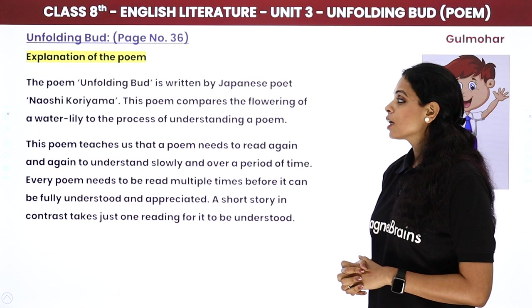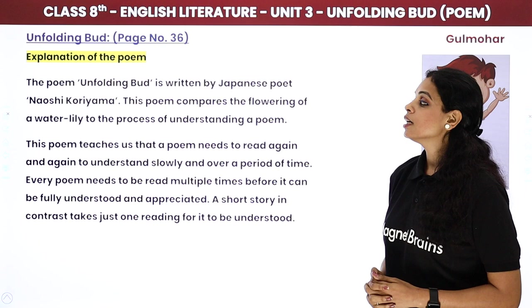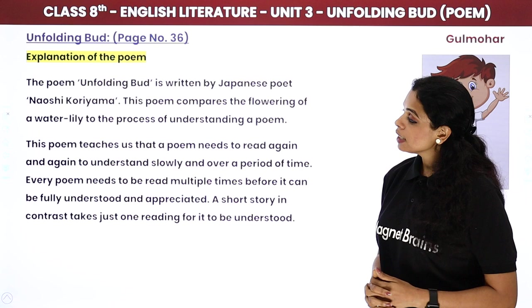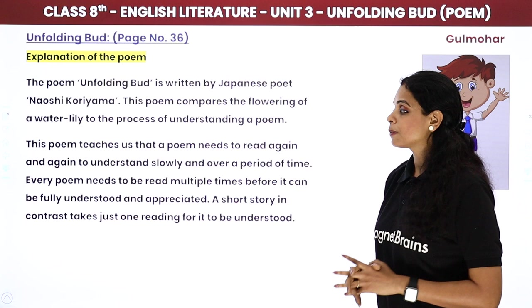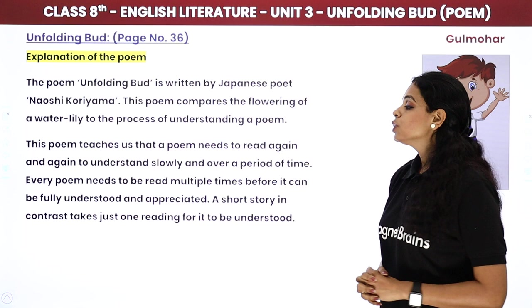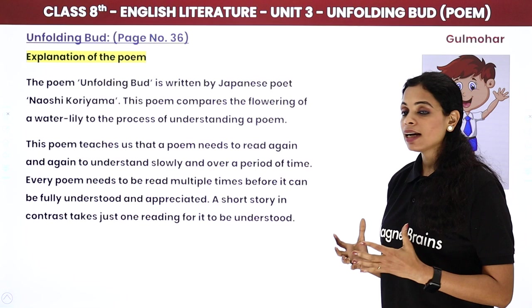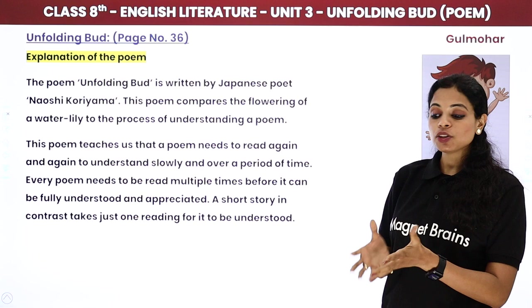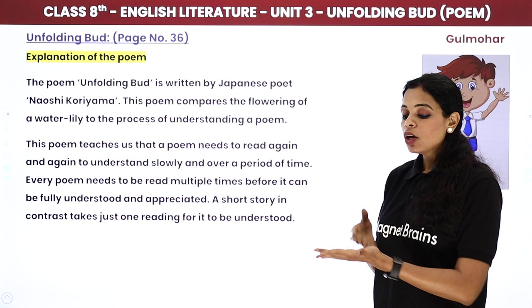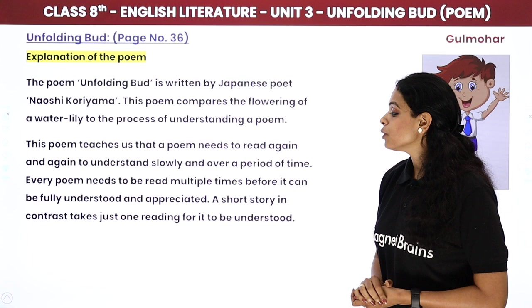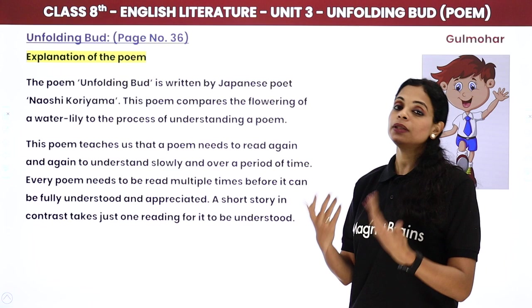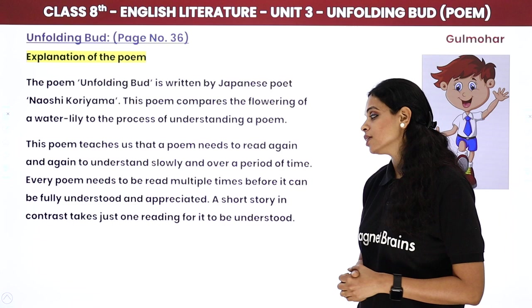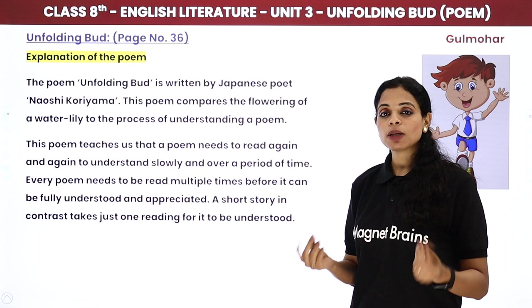The poem 'Unfolding Bud' is written by Japanese poet Naoshi Koryama. This poem compares the flowering of a water lily to the process of understanding a poem — if any question comes in the exam, you can write this and get marks. This poem teaches us that a poem needs to be read again and again to understand it slowly over a period of time, because it uses many figures of speech. Every poem needs to be read multiple times before it can be fully understood and appreciated — unlike a short story, which can be understood in just one reading.